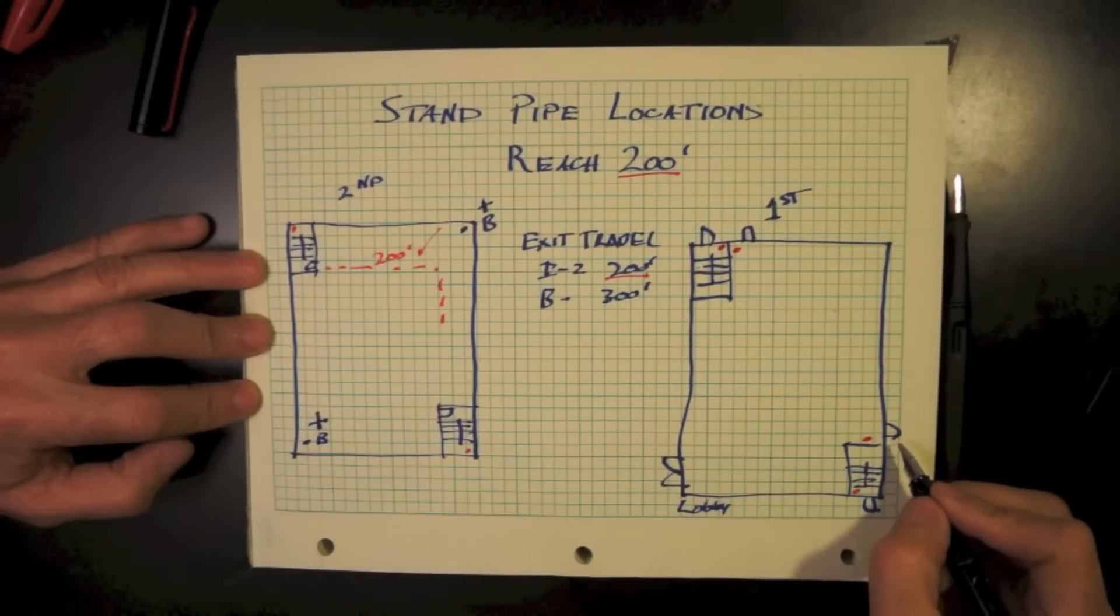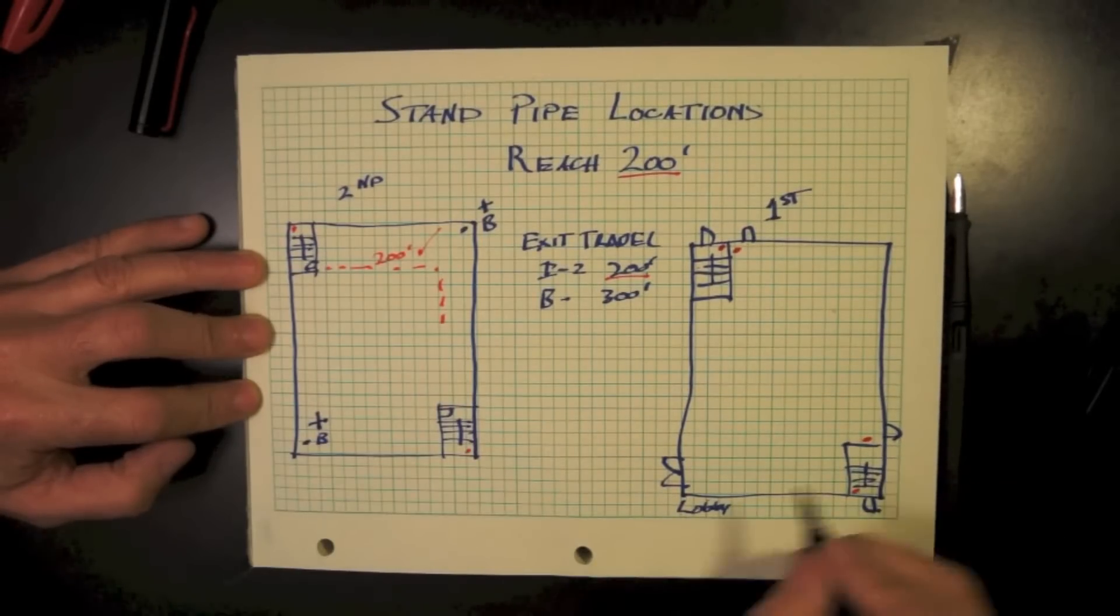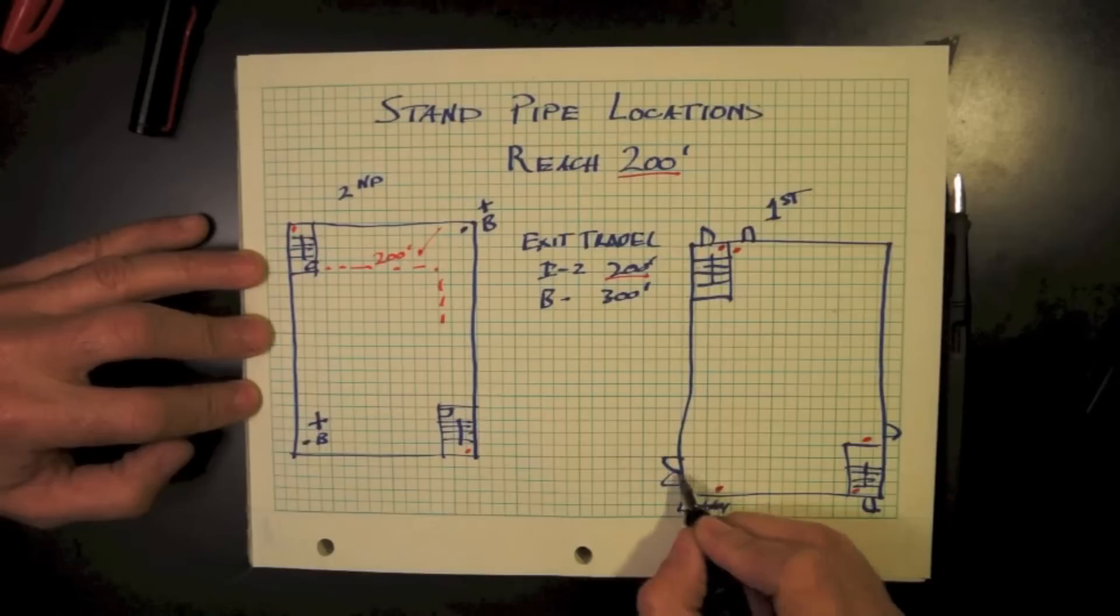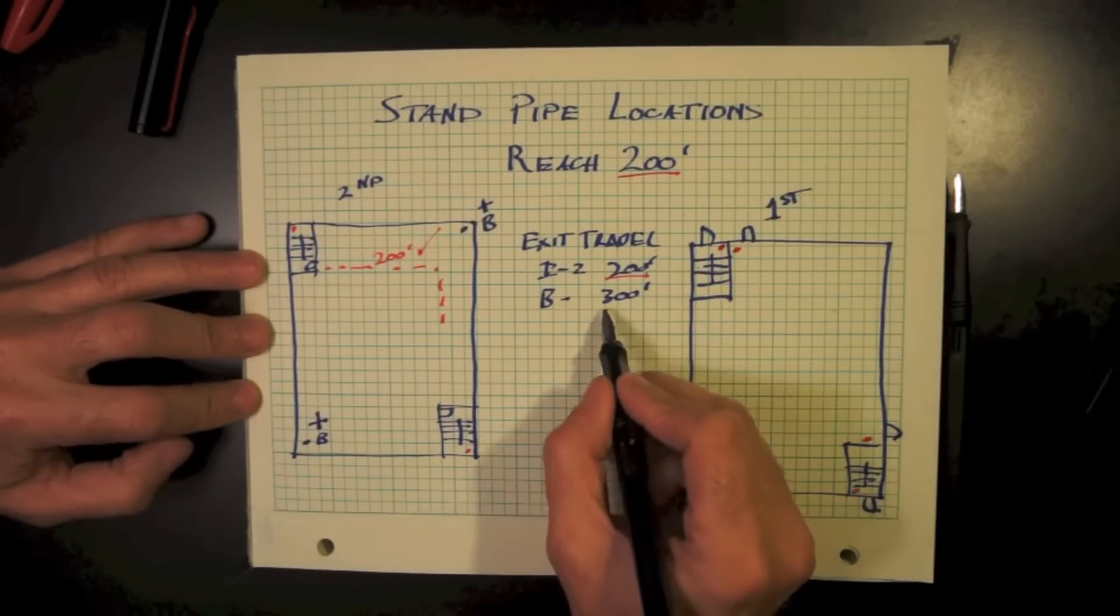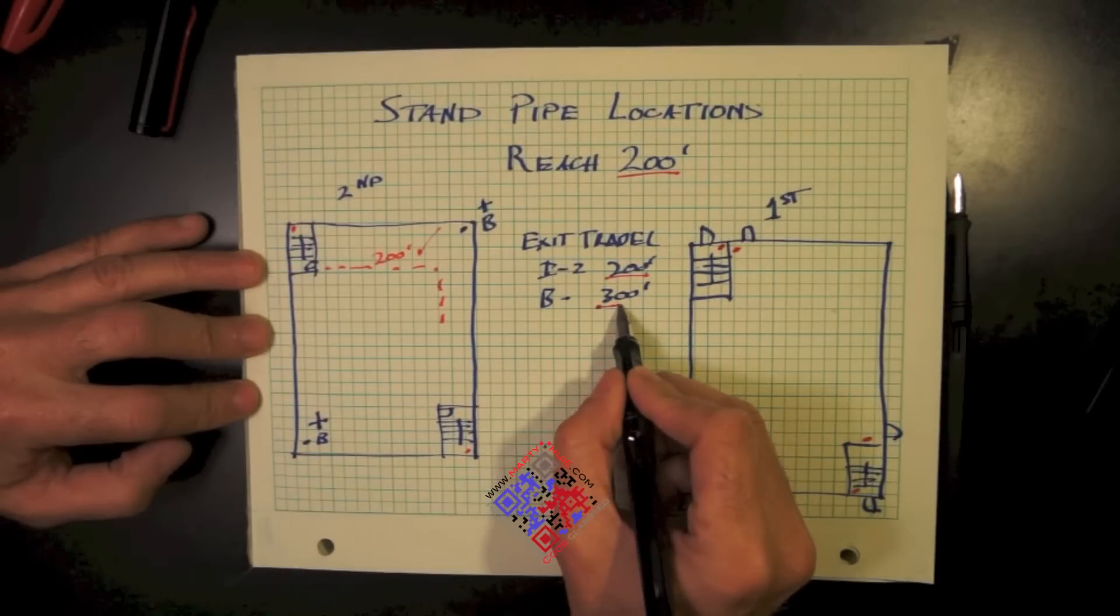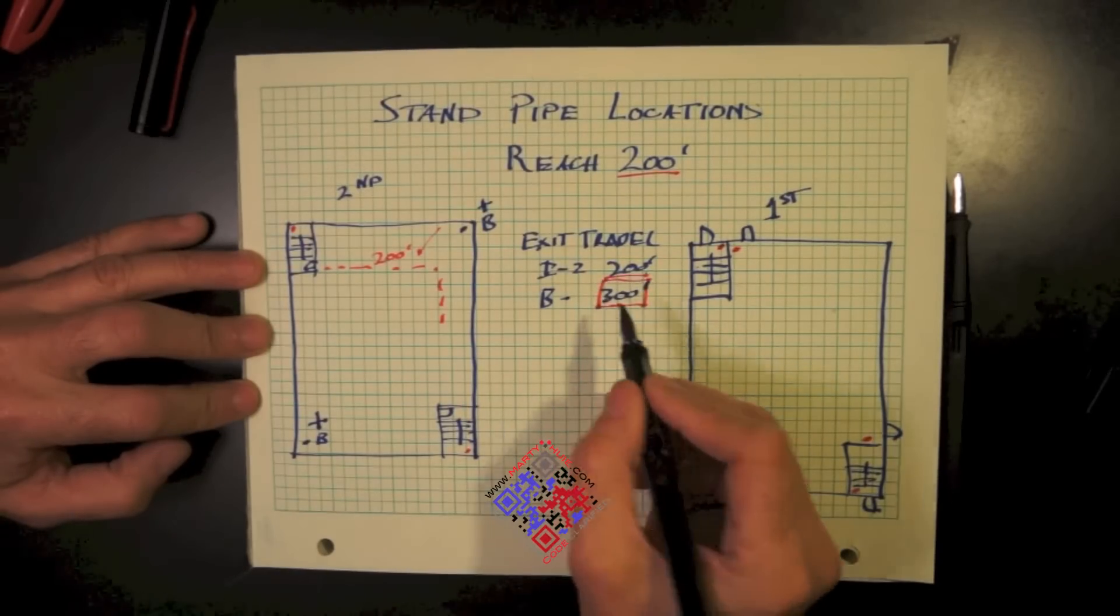More particularly, what I've seen in various buildings is the lobby is forgotten about, and a standpipe really should be located fairly close to the entrance. Additional standpipe topics are coming in forthcoming videos, including horizontal exits.